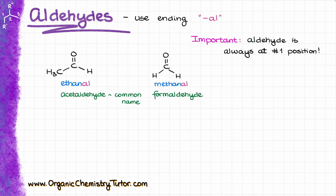But here is the catch. The aldehyde is always going to be at the end of our chain, so this means that you don't need to say that it is at position number one — it is always going to be assumed. So, for instance, in this molecule, we're going to call it 2-ethyl-3-methylpentanal. I don't have to specify where my aldehyde is, because it is always going to be at carbon number one.